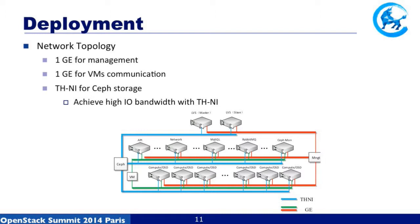For our network setup, each compute node has two Gigabit Ethernet interfaces and one high-speed network interface. We use one Gigabit Ethernet for management and another Ethernet for inter-machine communication and running workloads. We use the high-speed network for Ceph storage to achieve high I/O performance. This is our network topology.